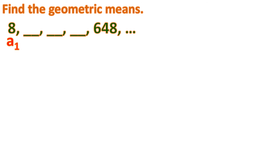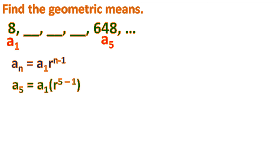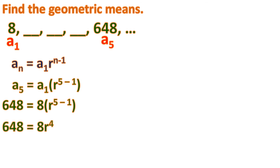We're given the first term as 8 and the last term, the fifth term, as 648. Using the general formula, we substitute n = 5: a sub 5 equals the first term times r to the power of 5 minus 1. Substituting, 648 equals 8 times r to the 4th power. Subtracting the exponent gives 5 minus 1 = 4. Then dividing both sides by 8, we get r to the 4th equals 81.